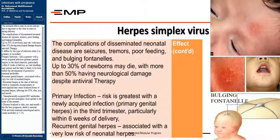Neonatal effects may be severe due to exposure in utero or during delivery. Complications of disseminated neonatal disease include seizures, tremors, poor feeding, and bulging fontanelles. Up to 30% of newborns may die, with more than 50% having neurological damage despite antiviral therapy. Primary infection risk is greatest with a newly acquired infection — primary genital herpes — in the third trimester, particularly within six weeks of delivery, as viral shedding may persist and the baby is likely to be born before the development of protective maternal antibodies. Recurrent genital herpes is associated with a very low risk of neonatal herpes.